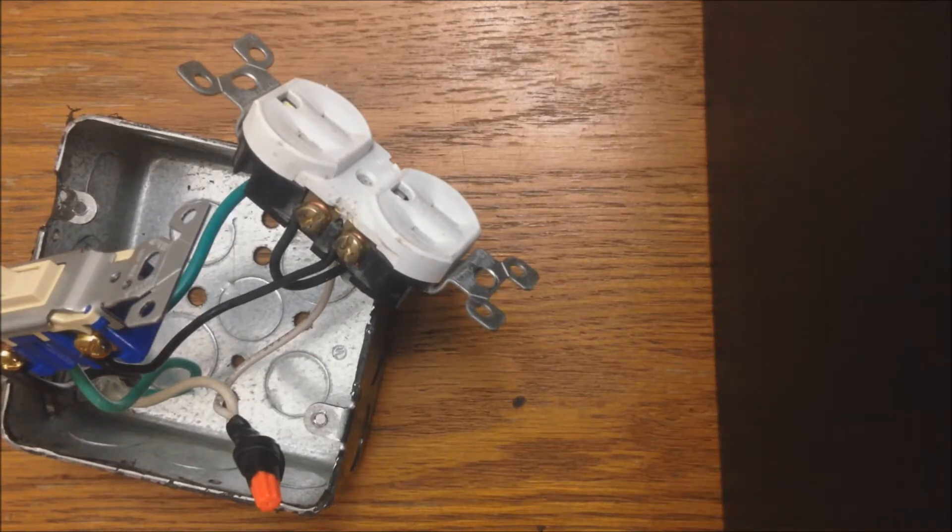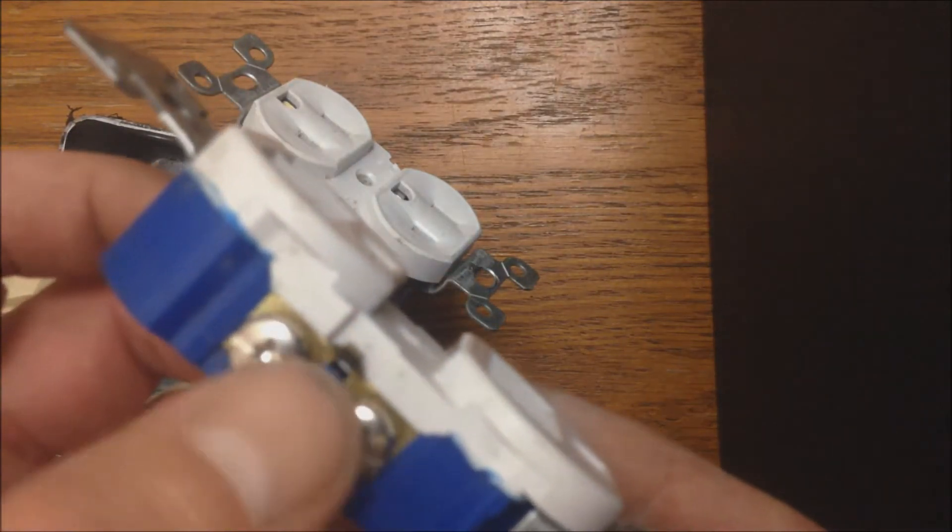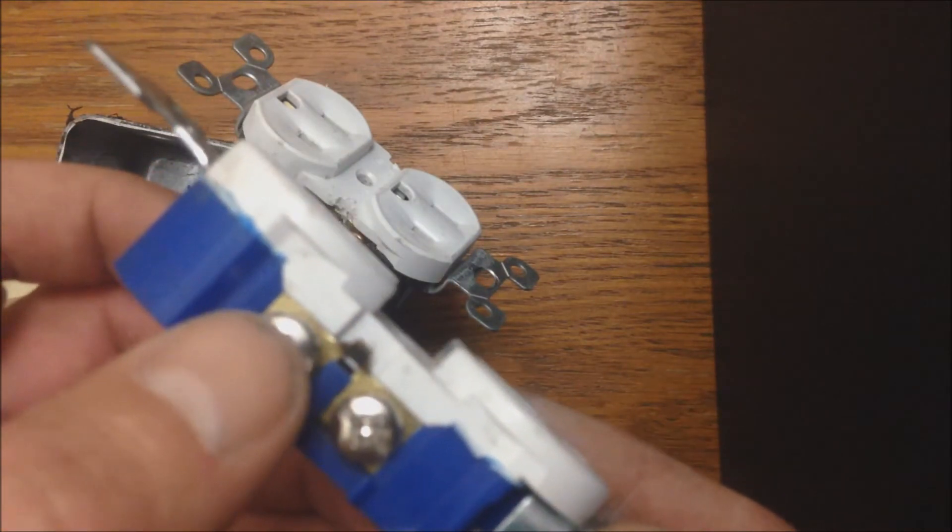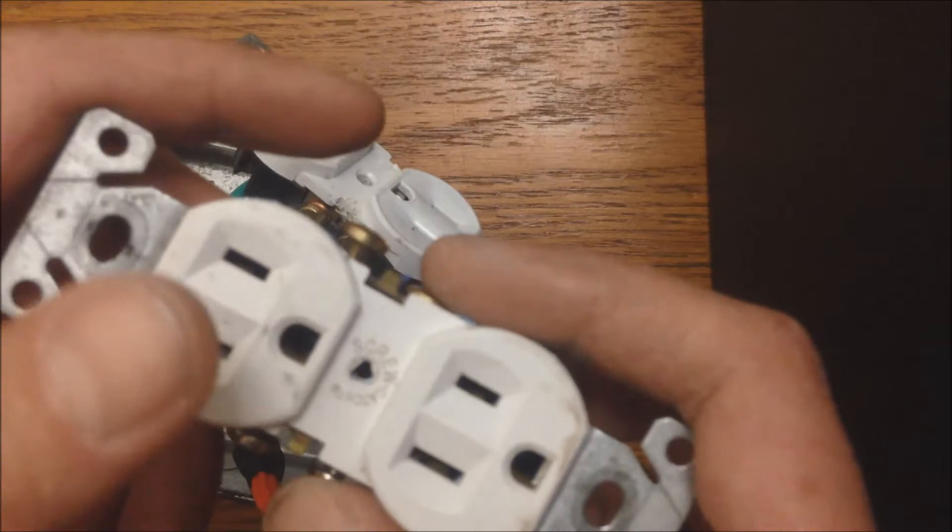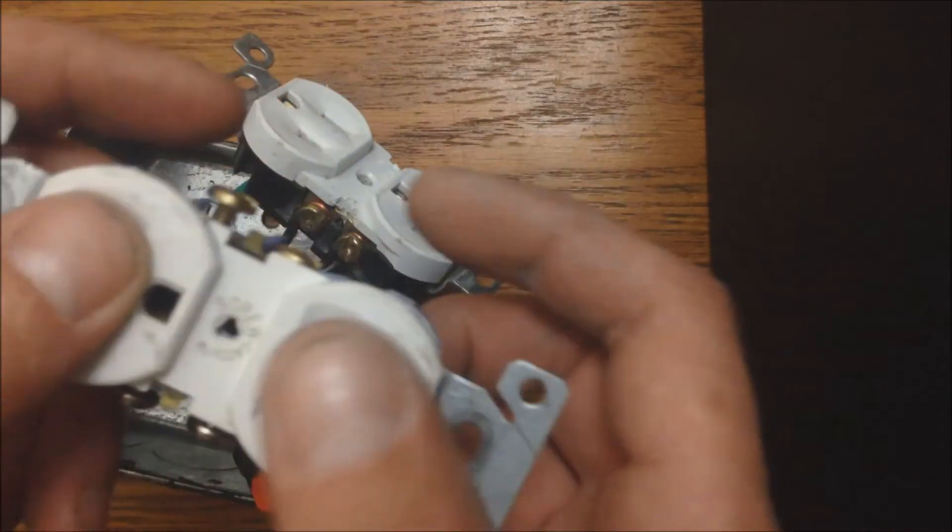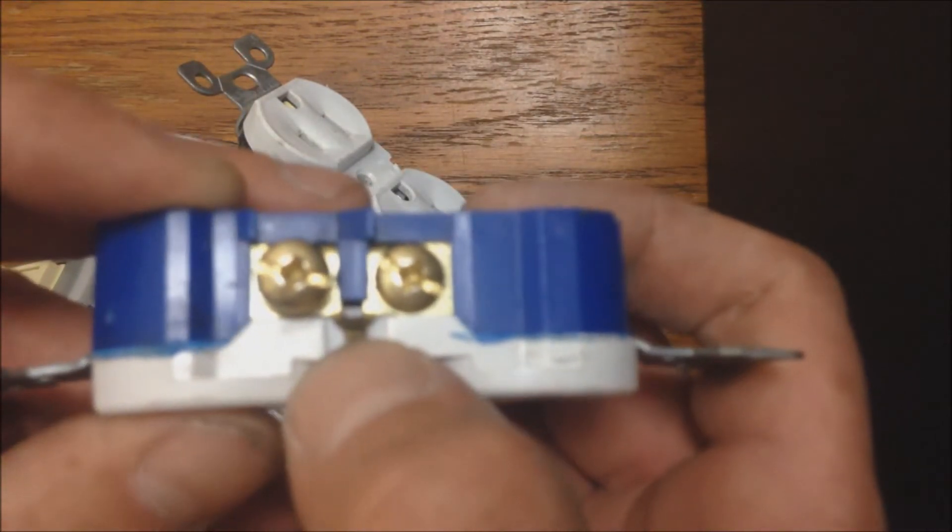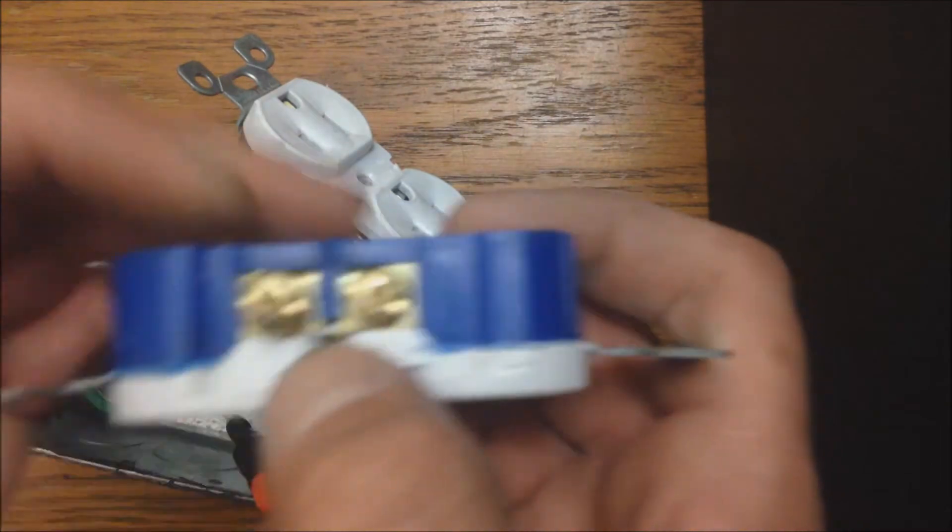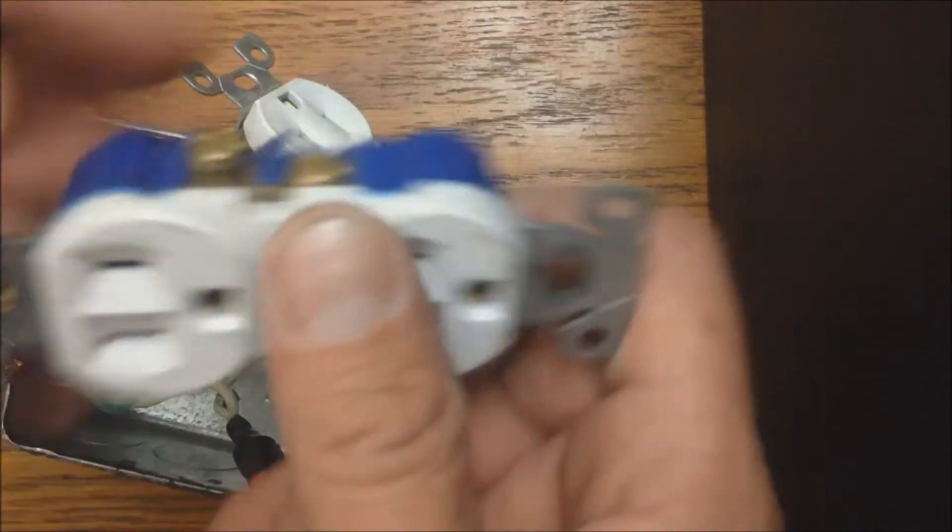Any outlet that you purchase out of the package is going to have these little brass tabs. You have your top and bottom outlets separated. That way, let's say you want the light switch on the top outlet, but you want the bottom outlet live all the time.